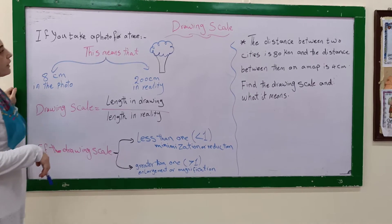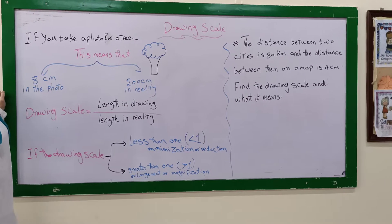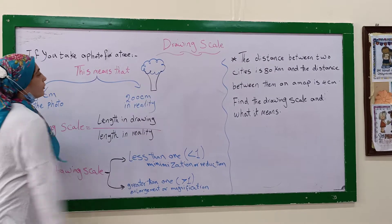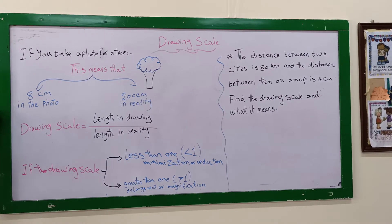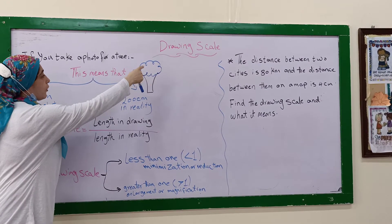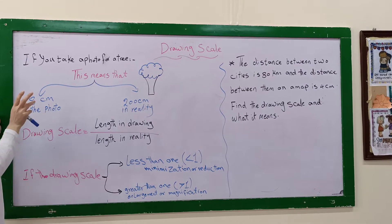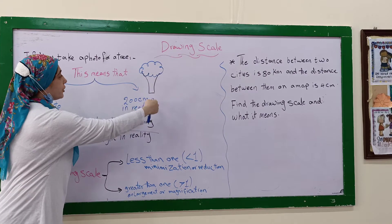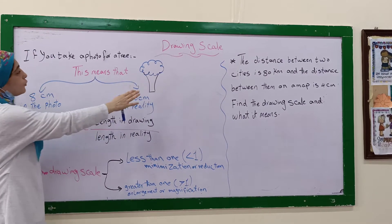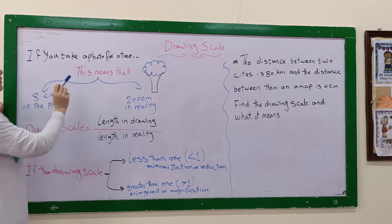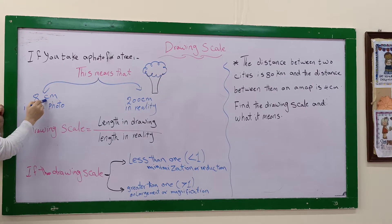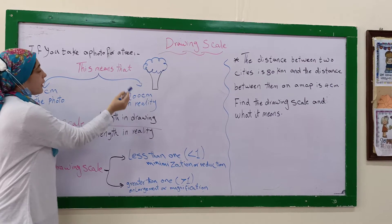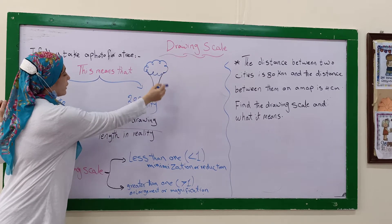Our lesson today is about drawing scales. If you take a photo of a tree on your phone, you will find that the height of the photo on your phone is 8 centimeters. But the real height of the tree is about 2 meters. That means 8 centimeters in the photo represents 200 centimeters in reality.